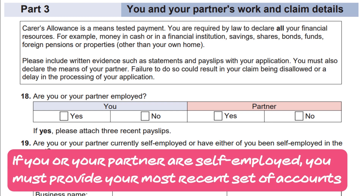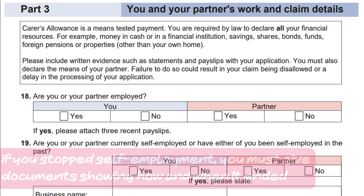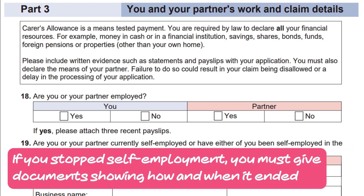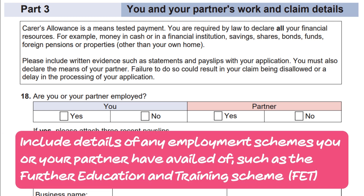If you or your partner are self-employed, you must provide your most recent set of accounts. If you stopped self-employment, you must give documents showing how and when it ended. Include details of any employment schemes you or your partner have availed of, such as the Further Education and Training Scheme.